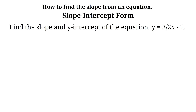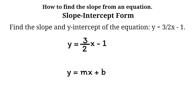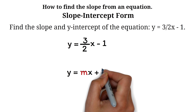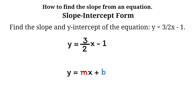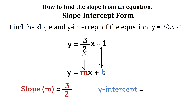Let's look at an example. Find the slope and y-intercept of the equation y equals 3 over 2 times x minus 1. This equation is already in slope-intercept form, so we simply identify the parts. The slope m is 3 over 2, and the y-intercept b is negative 1. Very straightforward.